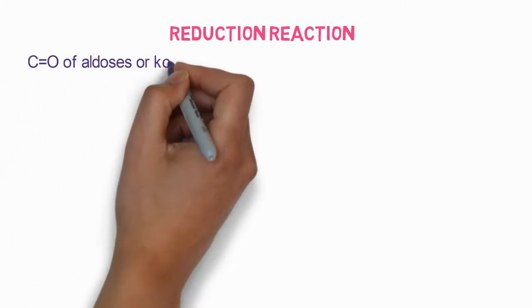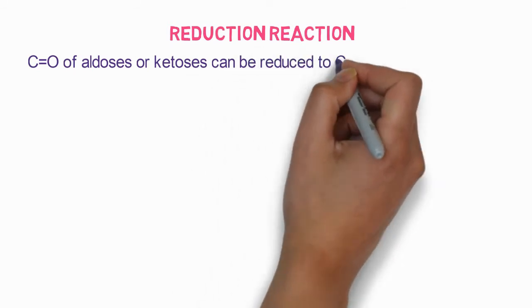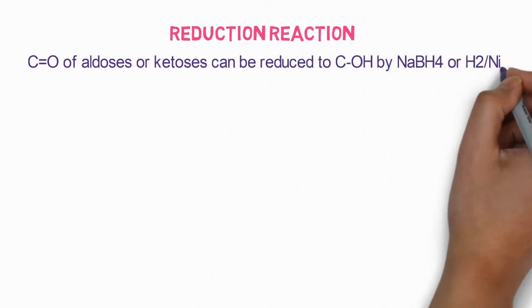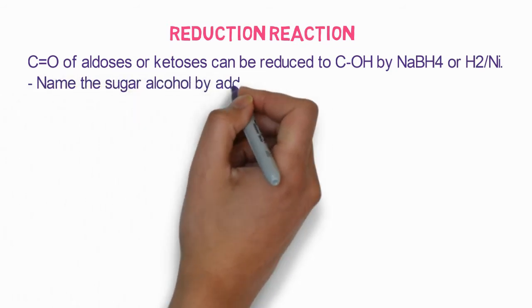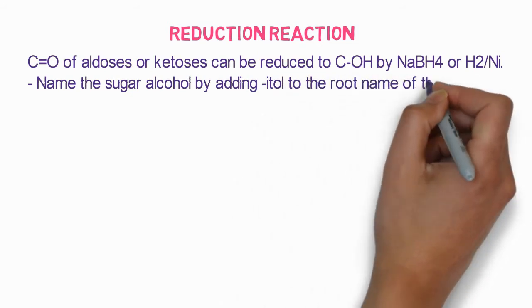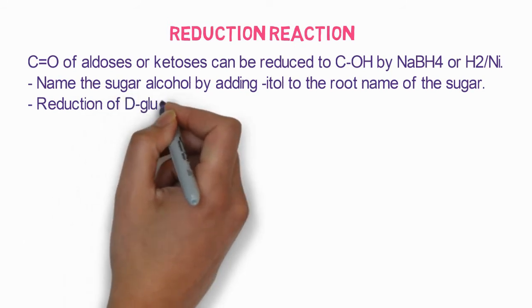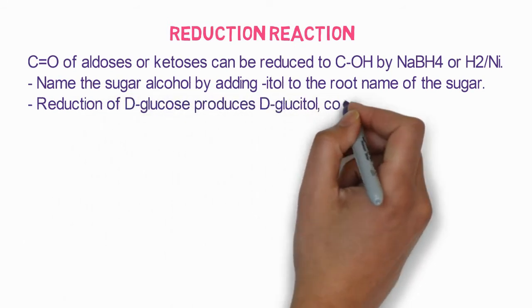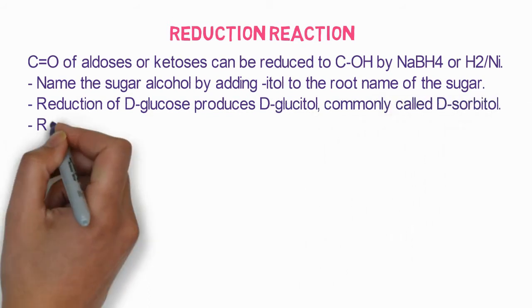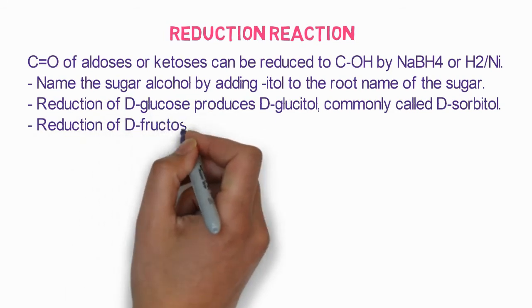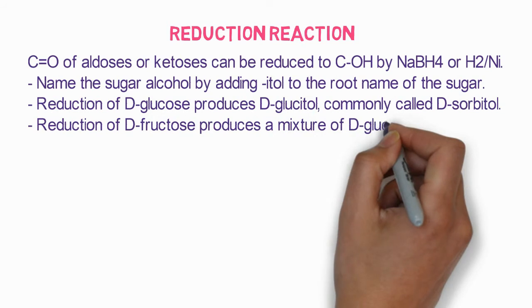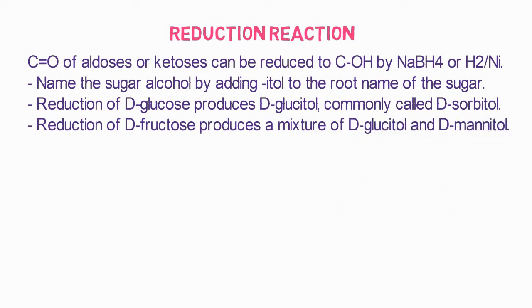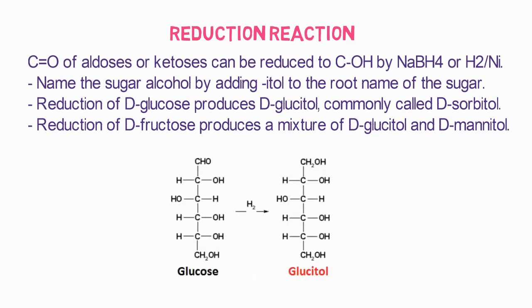The first reaction is the reduction reaction. The carbonyl of aldoses or ketoses can be reduced to a hydroxyl group by sodium tetrahydroborate or hydrogen and nickel. The name of the sugar alcohol is usually presented with the suffix '-itol' added to the root name. For example, glucose is reduced to glucitol, commonly called sorbitol. Similarly, other aldoses are reduced to a mixture of glucitol and mannitol.